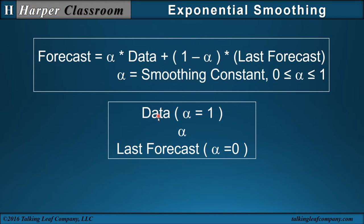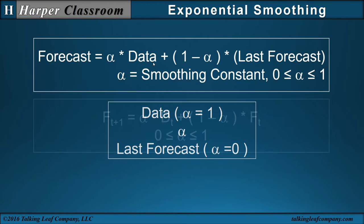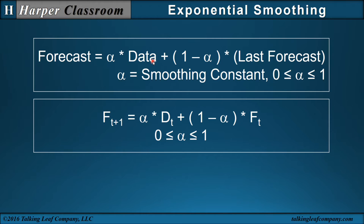In other words, if my data was above my last forecast, then my forecast for tomorrow is going to be a little bit higher. If my data is below my last forecast, then my forecast for tomorrow is a little bit lower. So I correct my forecast on a day-by-day basis by whatever data I observe. If I take that and apply it to an equation, my forecast for tomorrow, t plus one, is alpha times my data for today plus one minus alpha times my forecast for today, where alpha ranges between zero and one.